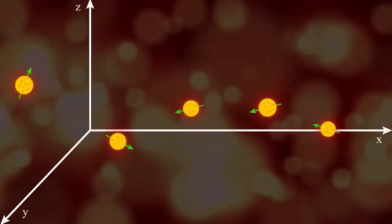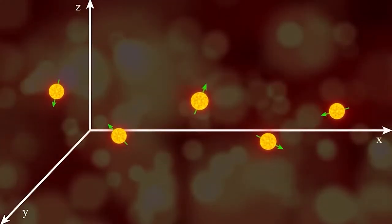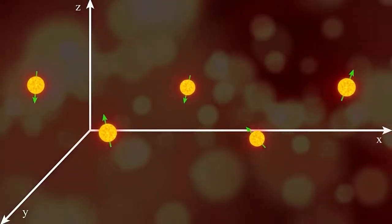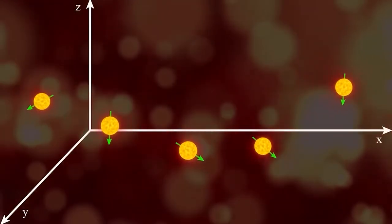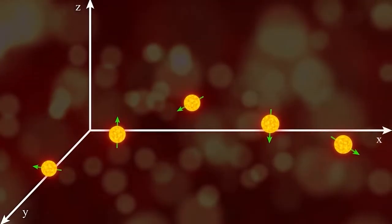The choice of which axis to use for determining spin projection isn't fundamental. Usually, an axis perpendicular to the particle's motion plane is chosen. But in some cases, determining the spin projection in the direction of motion becomes important. This quantity is also known as helicity.